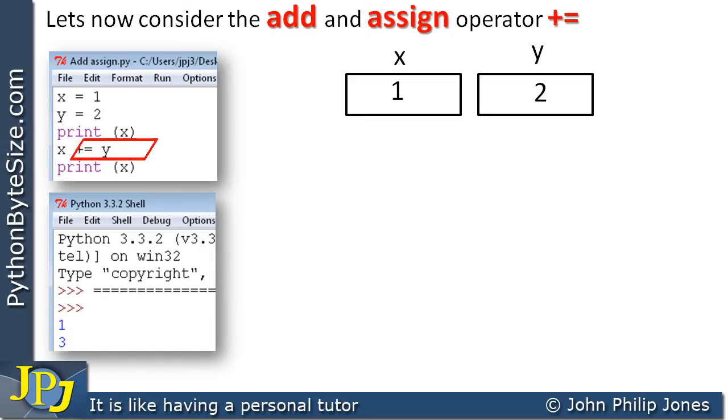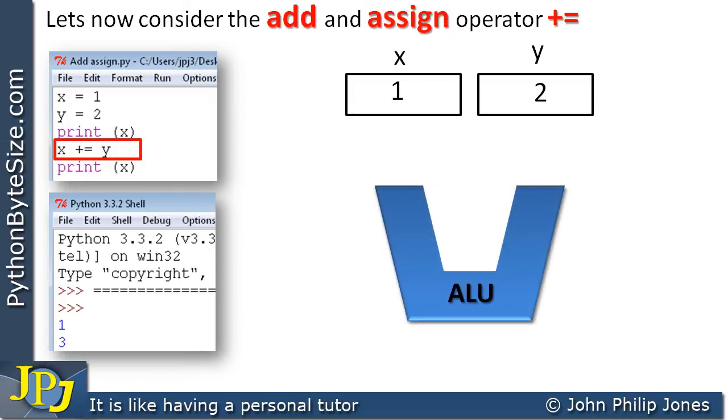Here we come to this cryptic looking add and assign operator. I'm going to show you what this one actually does by referring to the arithmetic and logic unit. The arithmetic and logic unit will be used and the following will occur. The 1 and the 2 are copied to the input of the arithmetic and logic unit. The output of this is going to be their addition. And then we assign to x.